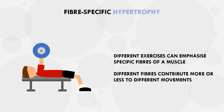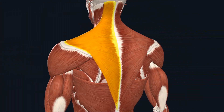Another example of this would be a muscle like the trapezius. The upper fibers run more upward, the middle fibers run more horizontally, and the lower fibers run more downward. This means that different movements will preferentially activate different portions of the trapezius. Shrugging motions will involve more of the very upper fibers, rowing exercises will hit the middle fibers more, and pull-downs will emphasize the lower portion of the traps.